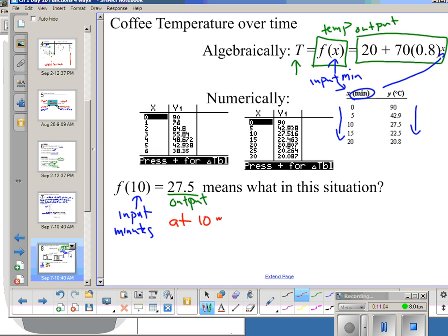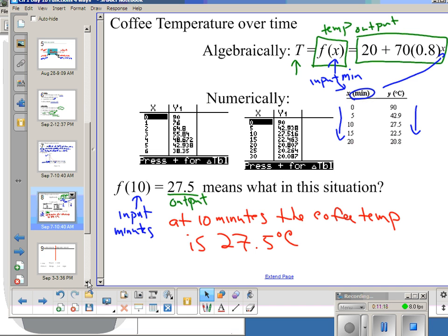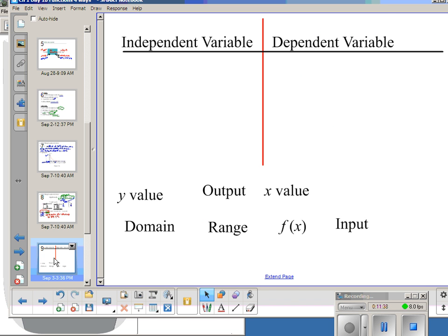Now, if I put this into words, trying to be as specific as possible, I can say that at 10 minutes, the coffee temperature is 27.5. And there we have it. So, that's a shorthand. Mathematicians are very efficient. You want to write it in as efficient a manner as possible. So, this notation right here means as much to a mathematician, which you are all becoming, as this entire sentence. And you can condense a lot of information into a very small space with notation.